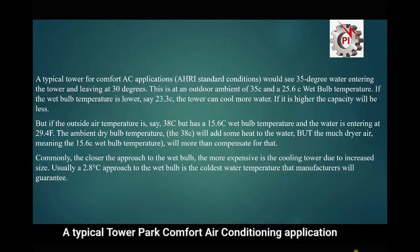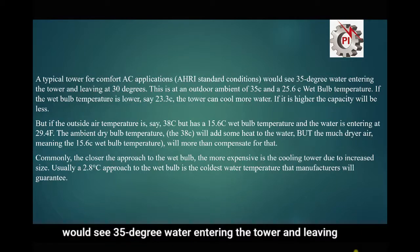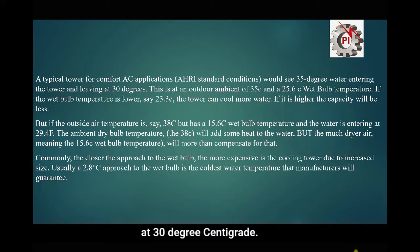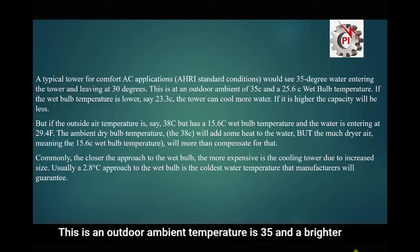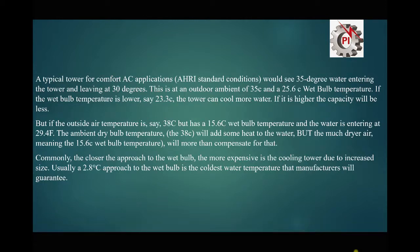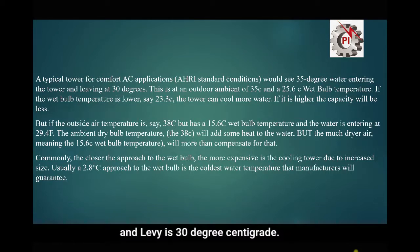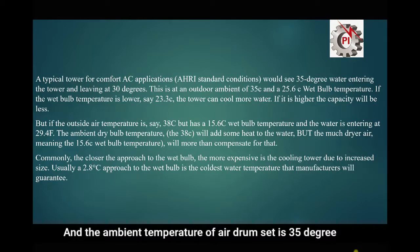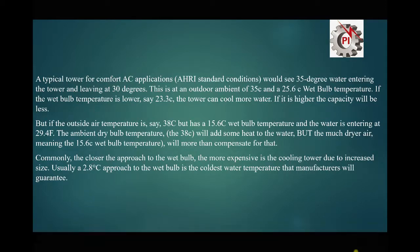A typical tower for comfort air conditioning applications under ASHRAE standard conditions would have water entering the tower at 35°C and leaving at 30°C, with an outdoor ambient temperature of 35°C and a wet bulb temperature of 25.6°C. In this case, if the wet bulb temperature is lowered — say to 23.3°C — the tower can cool more water.